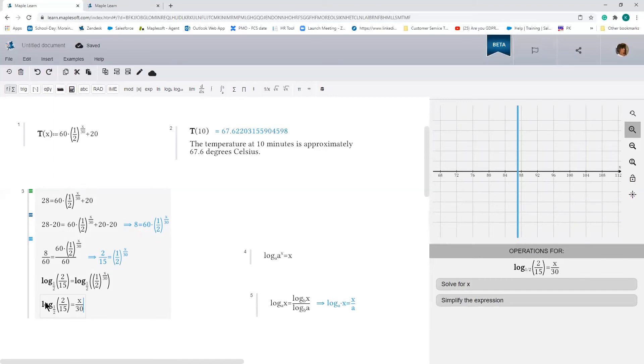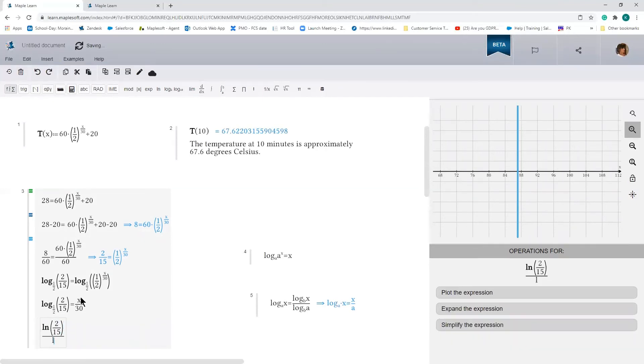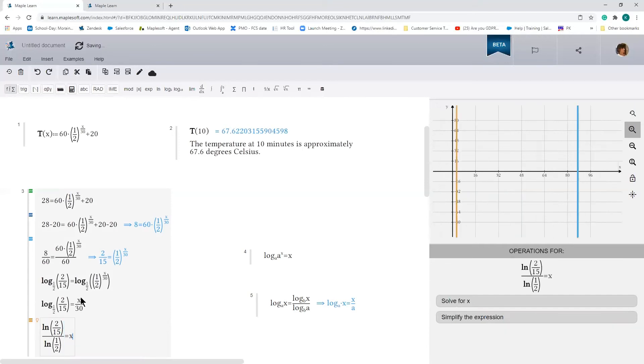So then this I would rewrite as ln of 2 over 15 divided by ln of one half. And I'm going to say this is equal to x over 30.